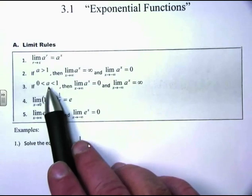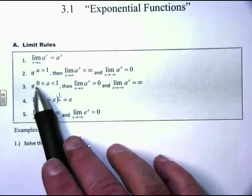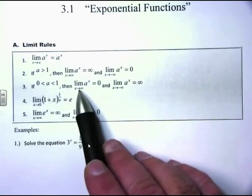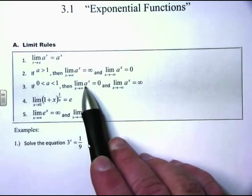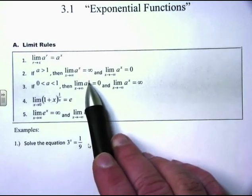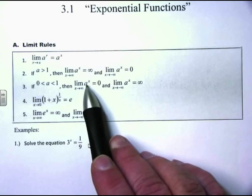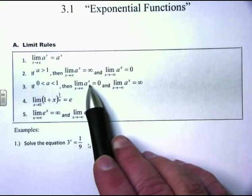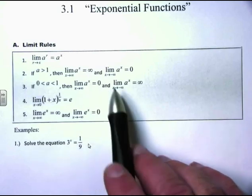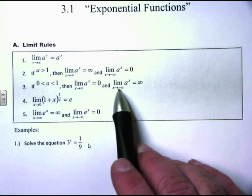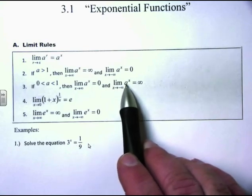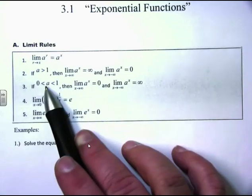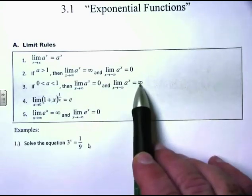If we change the base to between 0 and 1, and take the limit as x approaches infinity of a fractional base to a power — taking a fraction of a fraction repeatedly — that will go to 0. However, taking the limit as x approaches negative infinity of a to the x, where a is a fractional base, that actually blows up to infinity.